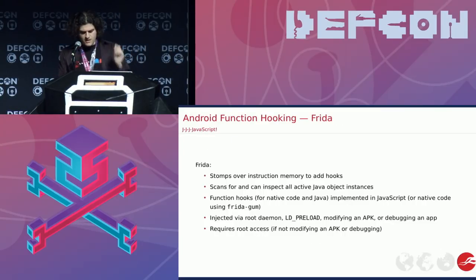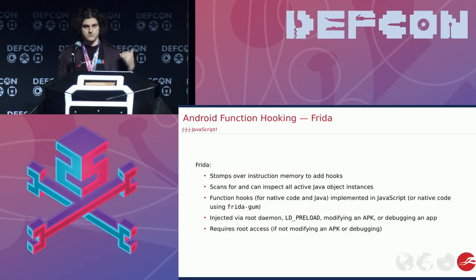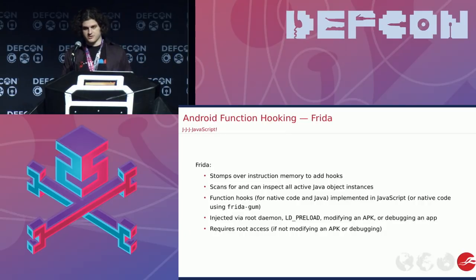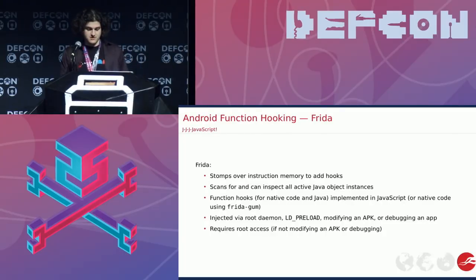Moving on, we have Frida, which is sort of the new hotness for a while. It works on Android — it actually stomps over the actual instructions in memory to jump to its own hooks. It also recently has the capability to inspect and list all the active Java objects so you can tap one specific object. The function hooks are generally implemented in JavaScript, which is not something I like, but it works for many people. You can also use the native C/GLib code with GUM to do hooking with anything that compiles down to native code.